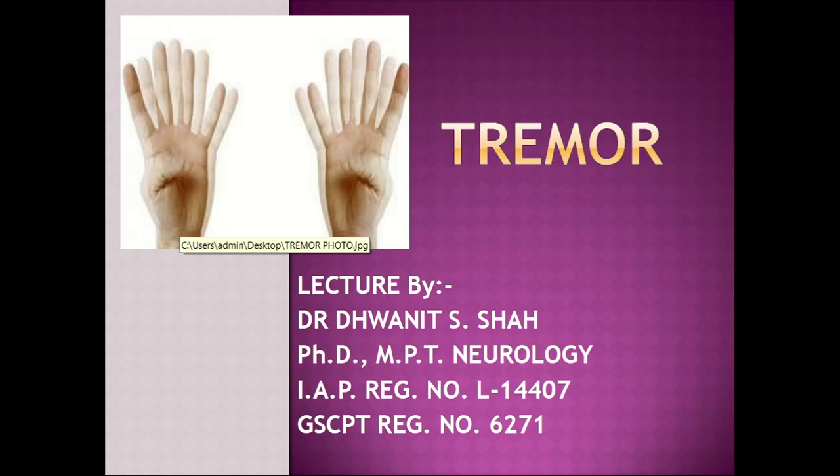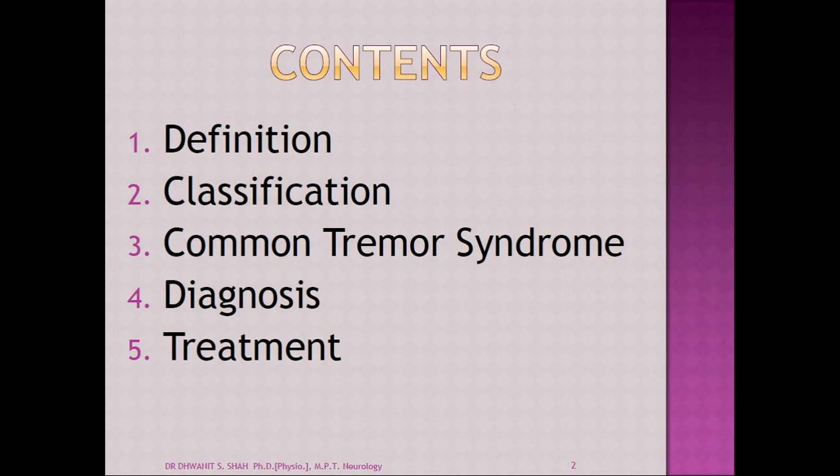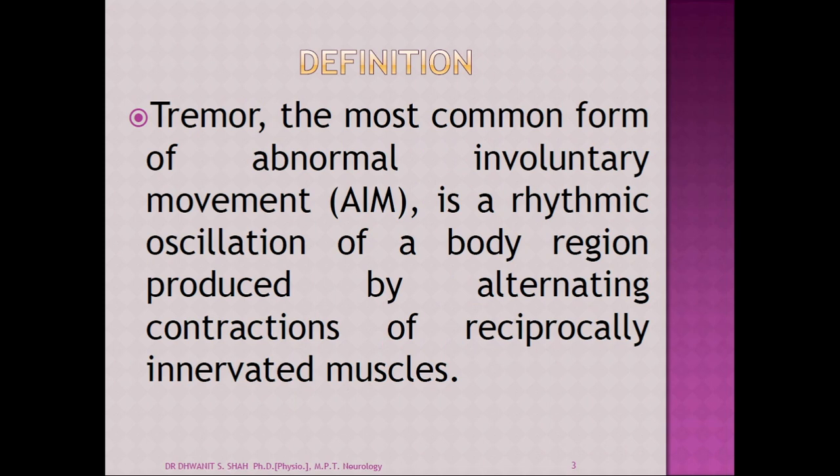In this lecture we will learn what are the types of tremor, how to identify them, how to test, what are the treatments, and how to differentiate and diagnose all the tremors. These are the contents of today's lecture: definition, classification, common tremor syndromes, diagnosis, and finally treatment. The most common form of abnormal involuntary movement — in short, AIM — is a rhythmic oscillation of a body region produced by the alternating contraction of reciprocally innervated muscles.